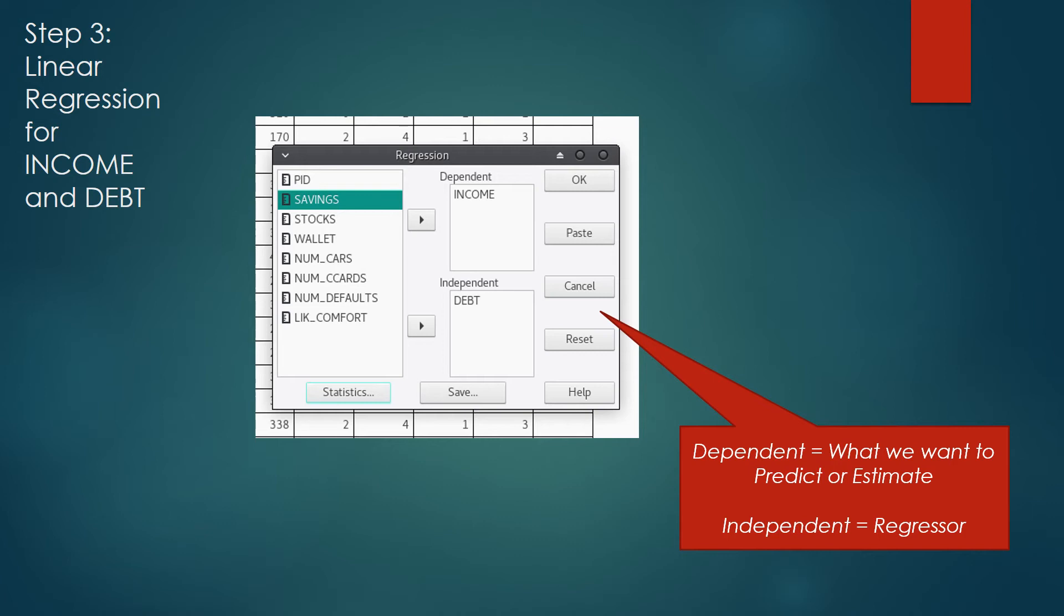Just like we figured out in our previous slide, income is the dependent variable. Debt is the independent variable. Move those variables over to their respective boxes.